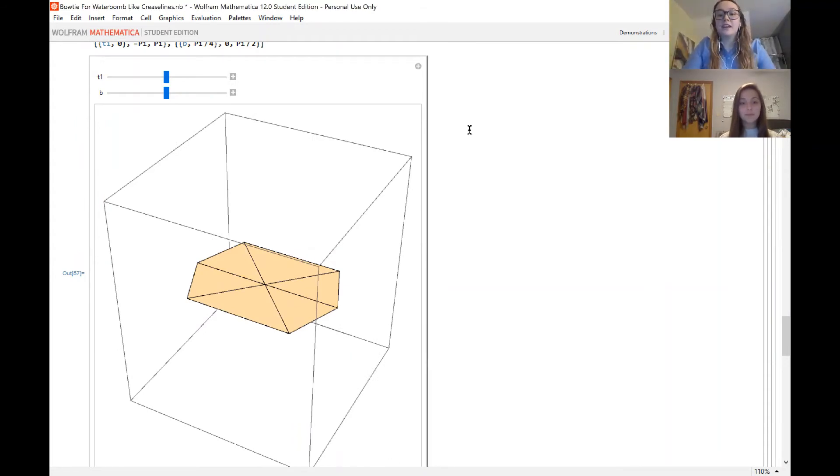Similarly, here we have mode two of the bow tie, which also has an angle b as we saw in mode one, which changes and then a slider to actually fold the paper. And again, this just proves that our equations we have are rigid folding equations.